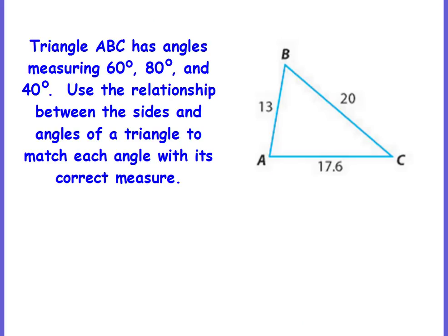Now we're going to be given the side lengths and figure out where the angle degrees go. Triangle ABC has angles measuring 60 degrees, 80 degrees, and 40 degrees. We're going to match each angle with its correct measure. Large is opposite large, medium is opposite medium, small is opposite small. Starting with the largest side, which is 20 — which vertex does the side 20 not touch? It touches B and C, but not A. So angle A is opposite the 20. Since 20 is the largest, angle A is the largest, which would be 80 degrees.